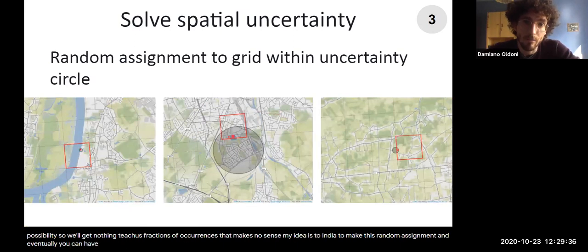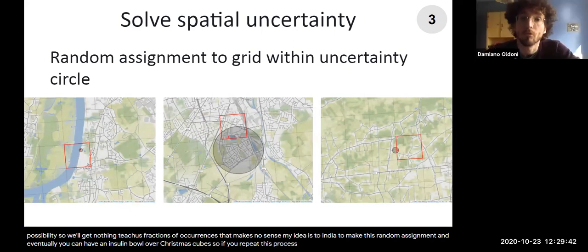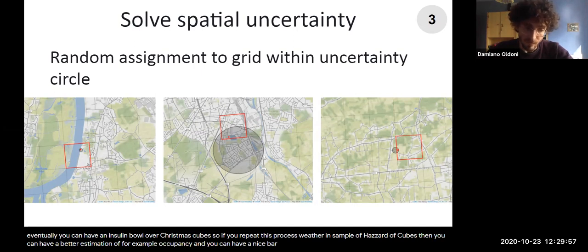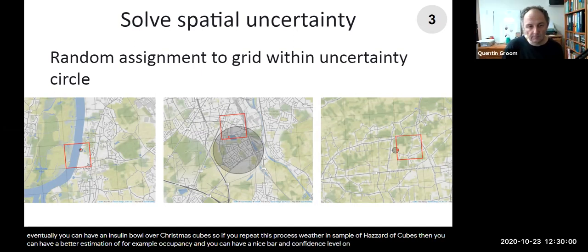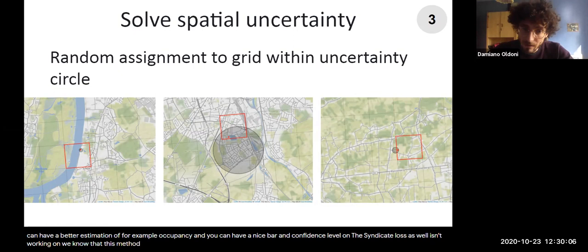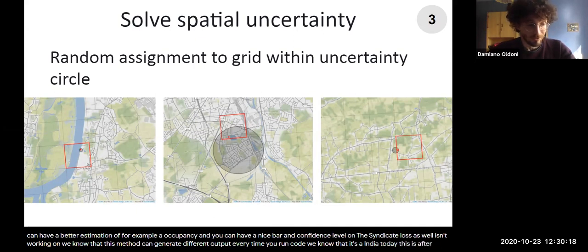My idea is indeed to make this random assignment. And eventually you can have an ensemble of occurrence cubes. So if you repeat this process, Monte Carlo-like, you know, hundreds of times, you have an ensemble of hundreds of cubes, then you can have a better estimation of, for example, the occupancy. And indeed, you can have a nice error bar and confidence level on these indicators as well. This is indeed something that we are working on.